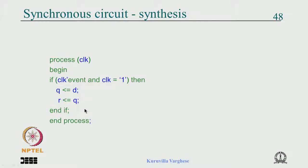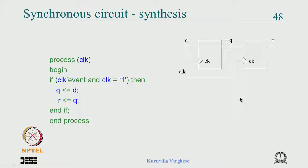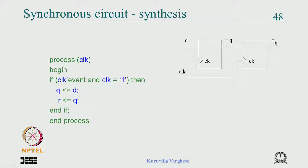The result is two flip-flops: the first gives Q, the second gives R. Any assignment under clock'event gives a flip-flop — so Q gets a flip-flop, R gets a flip-flop. That is consistent with the rule: any assignment under clock'event gives a flip-flop or register. This gives you an idea of how to code a shift register.